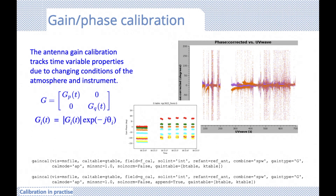After delay calibration and bandpass calibration, everything remaining is very definitely antenna-based and leads to amplitude and phase changes that are often time-dependent — changing over time during my observation. Our antenna gain calibration is the matrix we use to track these time-varying distortions, mainly due to changing conditions in the atmosphere and instrument.